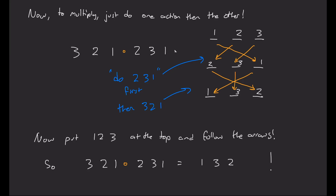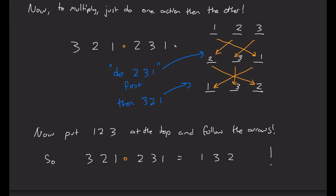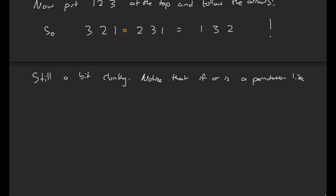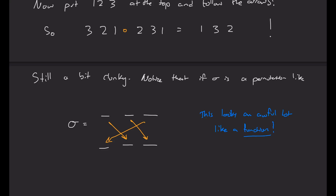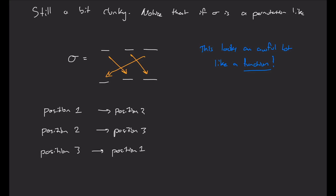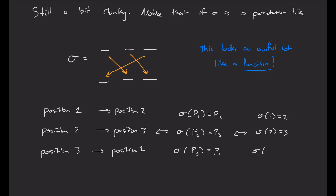That's kind of neat. I strongly encourage you to try your own permutations and see if you can multiply them out and see if you see any patterns. But this is still a little clunky, so I want to refine our idea of what these permutations are. Notice that if sigma is a permutation like this, you may have noticed that this looks an awful lot like a function. What is this function doing? It's sending position 1 to position 2, position 2 to position 3, and position 3 to position 1. I can rewrite that as: sigma(1) = 2, sigma(2) = 3, and sigma(3) = 1.